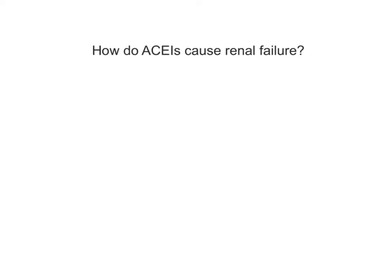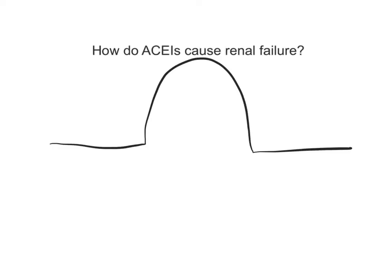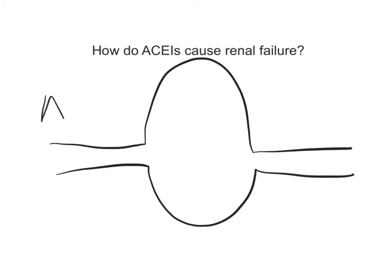We're going to start by looking at the glomerulus again — you have the afferent and the efferent arteriole. In this scenario, your starting point is a low flow state into the kidney.